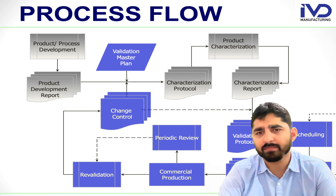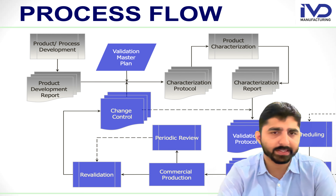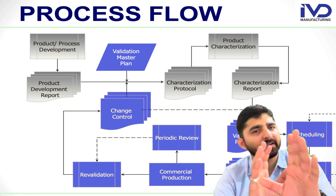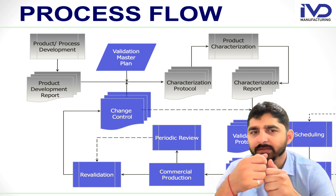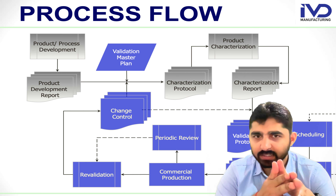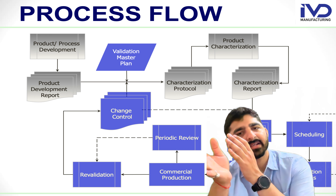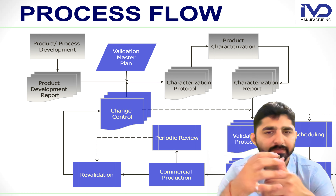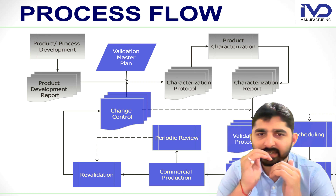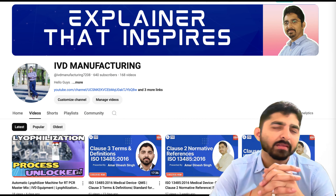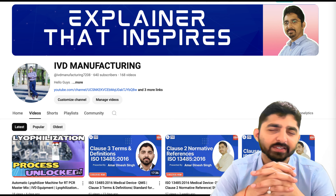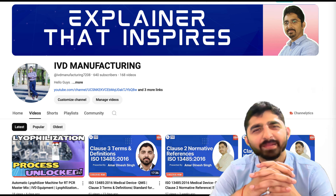Let's speak about the process flow chart for process validation. It starts from product development processes. Once you develop the product or processes, you compile the report, which then moves to subsequent stages: the characterization protocol, followed by product characterization, then the characterization report. Once this R&D phase is complete, it moves to the production team where the process validation is conducted. I hope you enjoyed today's lecture — please like, comment, and share the video to help grow the channel.